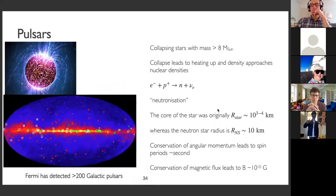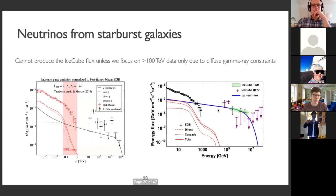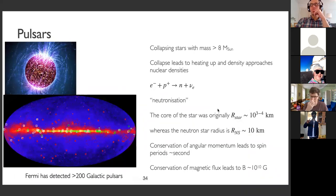I will very quickly talk about pulsars in the time we have left. I at first thought I would skip pulsars, but there's something very interesting currently going on with them. Pulsars are another route that massive stars take when they die, if their mass is larger than eight solar masses.